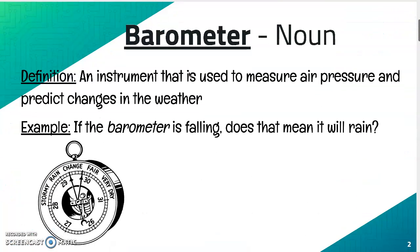The first vocab word is barometer. It's a noun. The definition is an instrument that is used to measure air pressure and predict changes in the weather. Example: If the barometer is falling, does that mean it will rain?